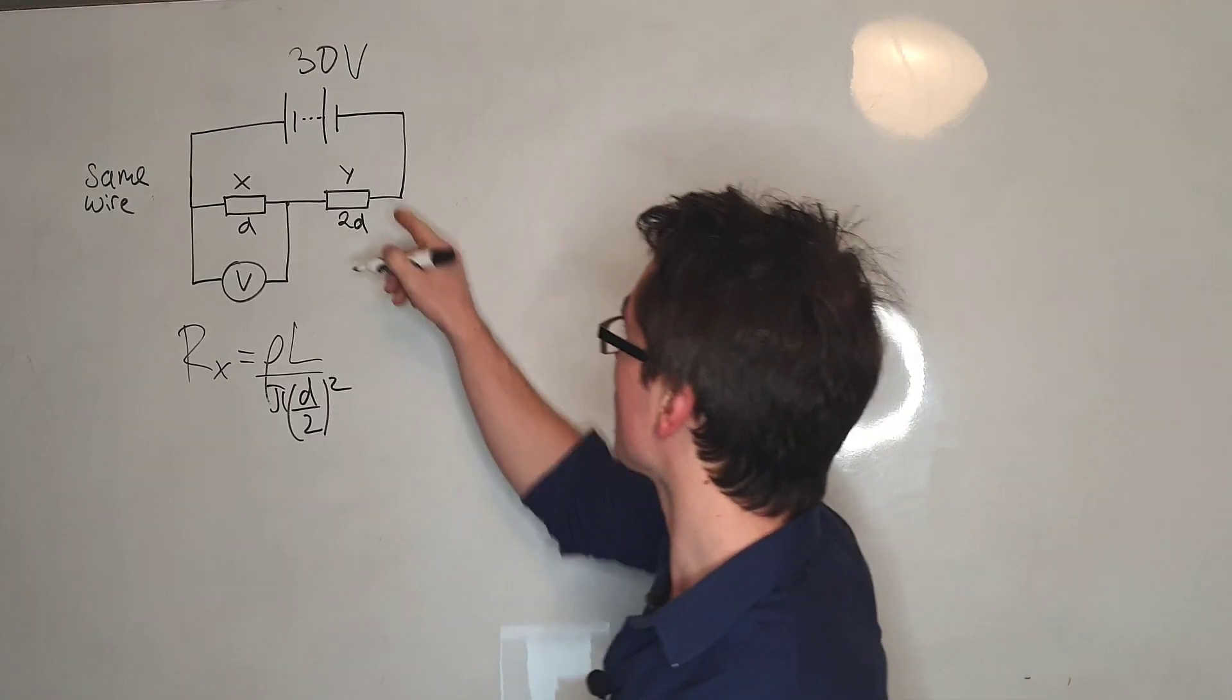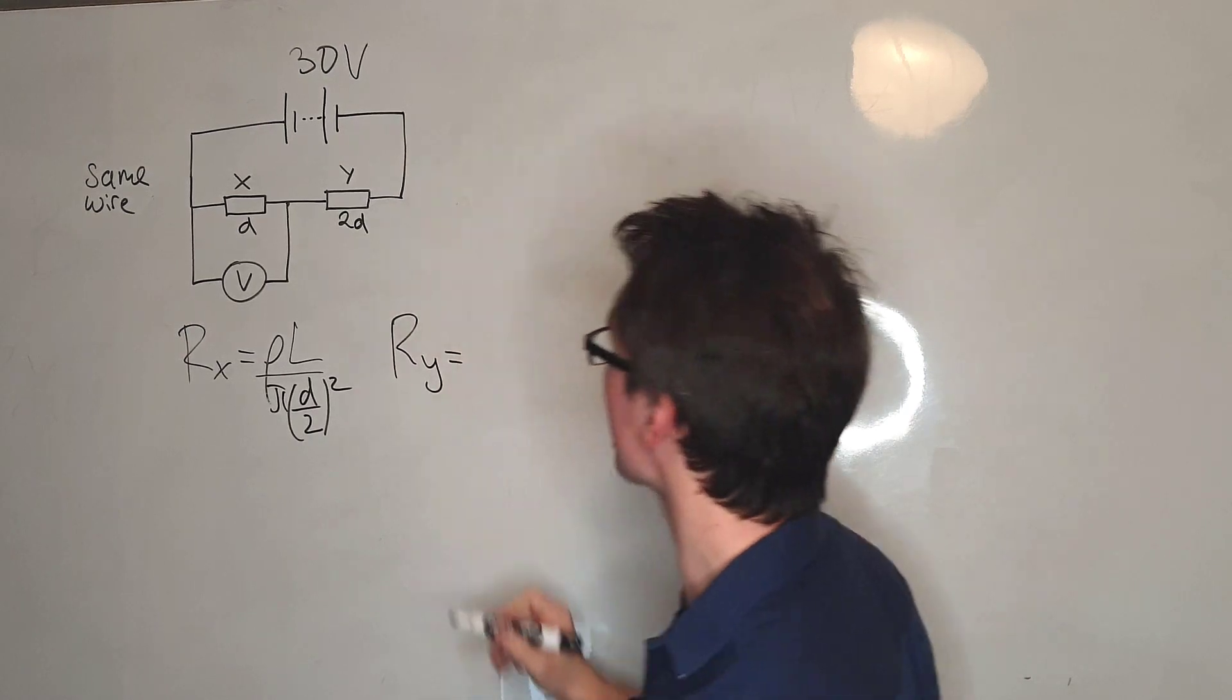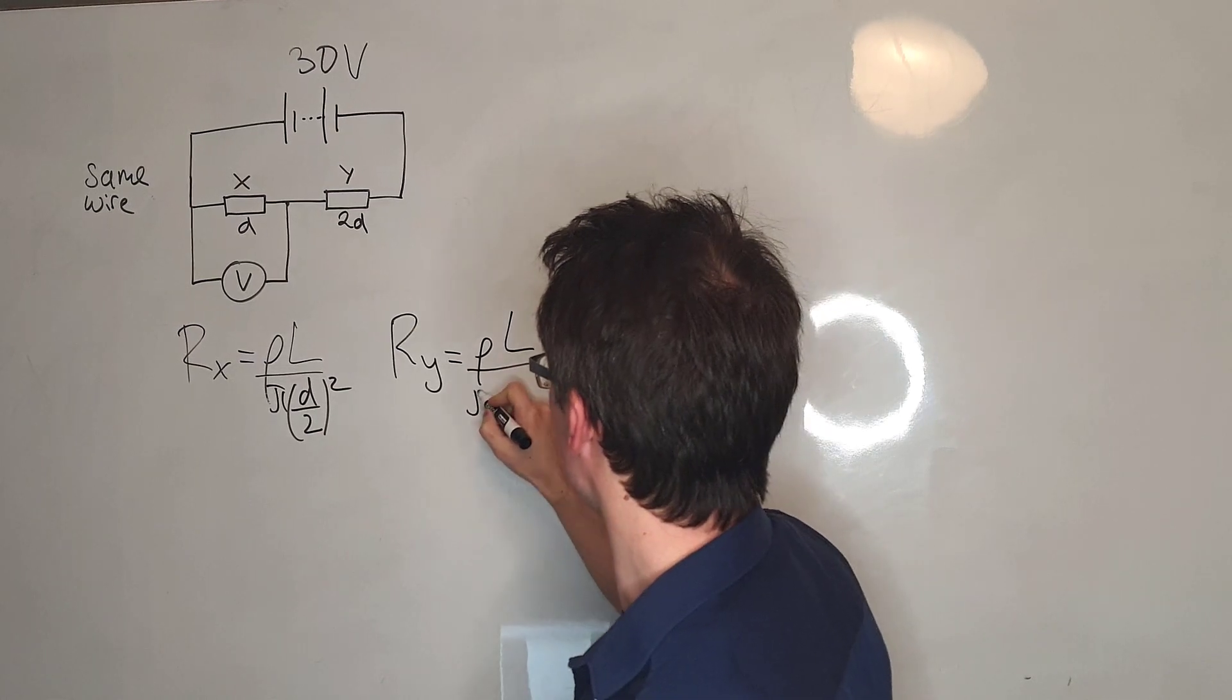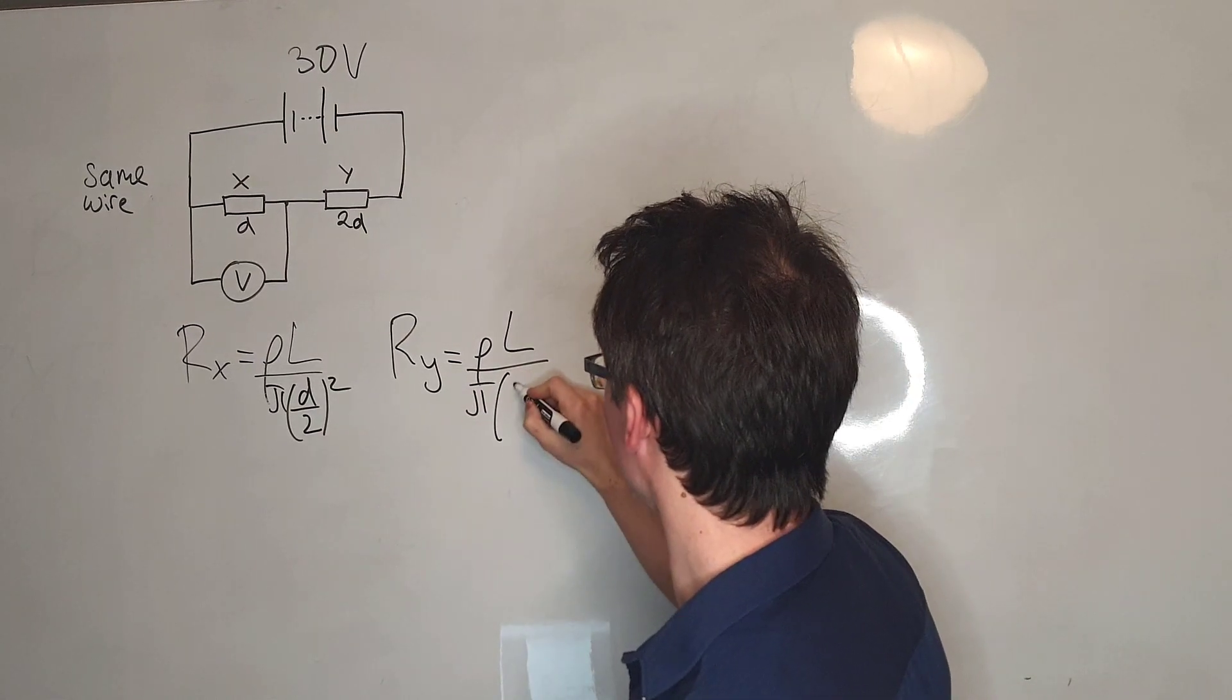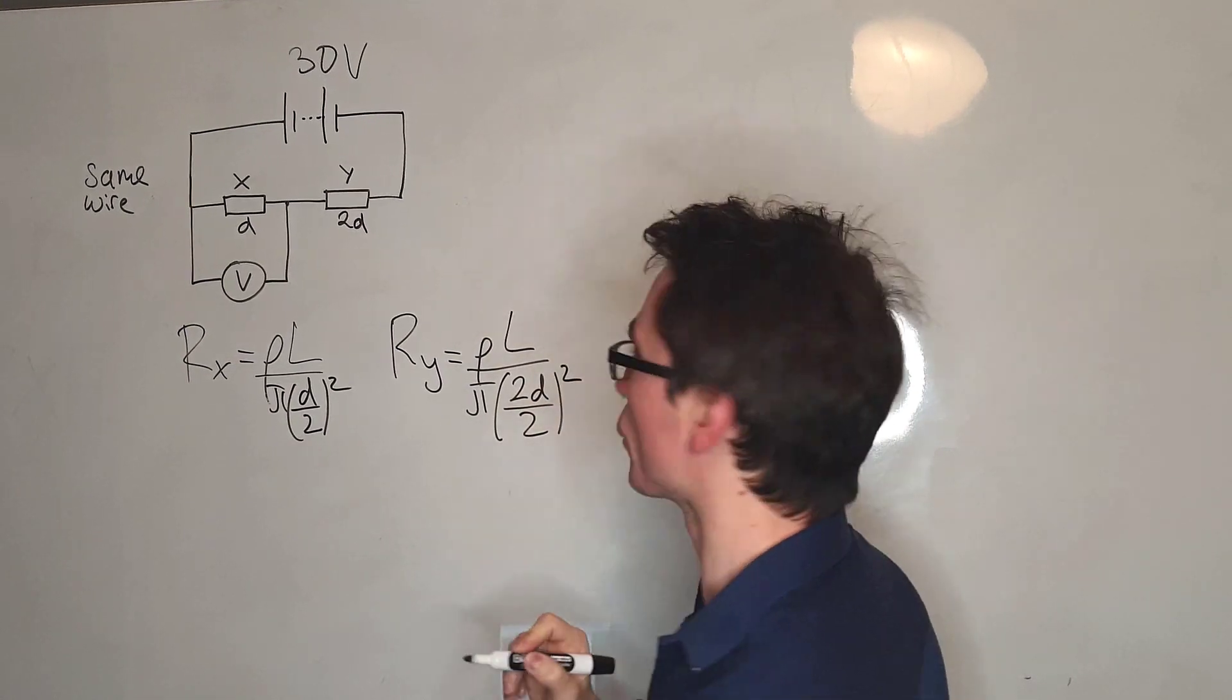In the meantime, the resistance of Y, we can call that Ry, will just be equal to ρL. Then we're going to be dividing that by π. Now, rather than D inside of the brackets, I'm going to write (2D/2) squared.